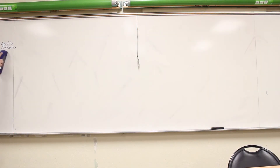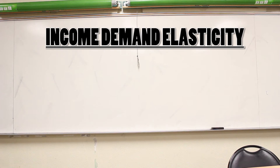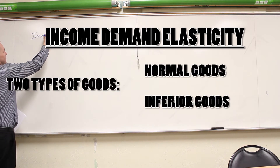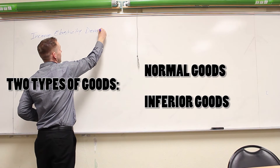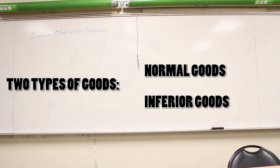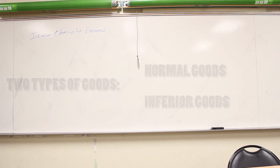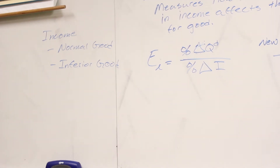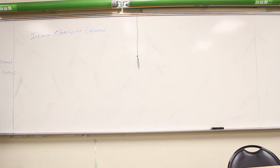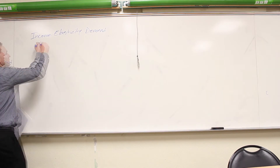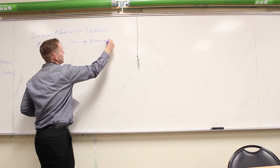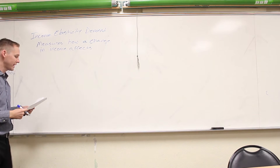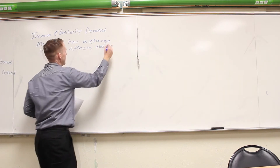What kind of relationship does income have? There are two types of goods: normal goods and inferior goods. Income elasticity of demand measures how a change in income affects the quantity demanded for a good.